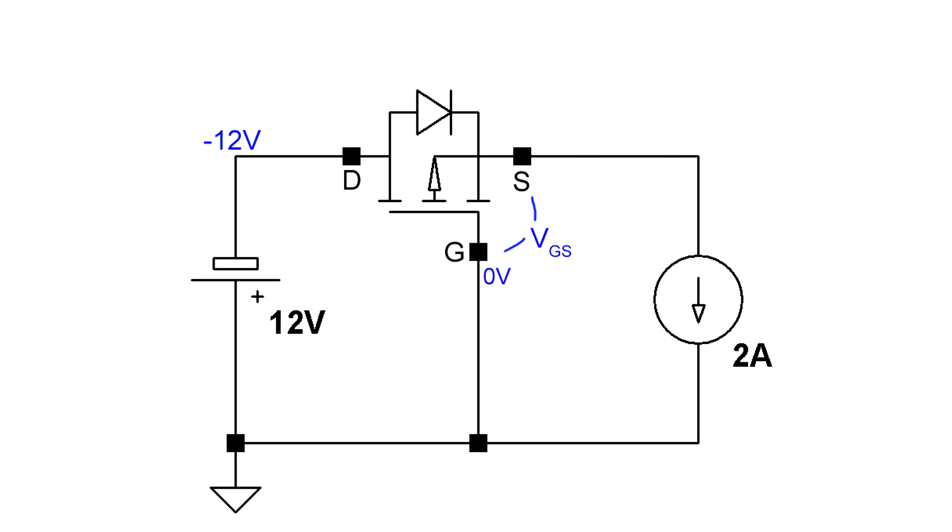Now you know the MOSFET is supposed to be off in this situation, because I told you so. But how do we prove it? Well let's pretend for a second that the MOSFET is on. If the MOSFET is on, the resistance between drain and source is almost 0. So that means that the voltage at the source is going to be almost the same as the voltage at the drain. So we've got minus 12 volts at the source, assuming that the MOSFET is on.